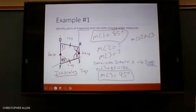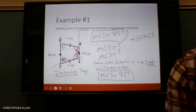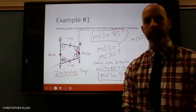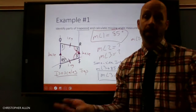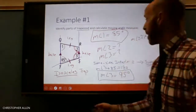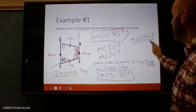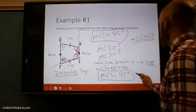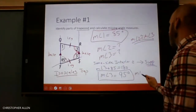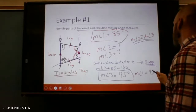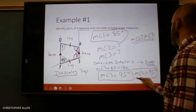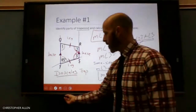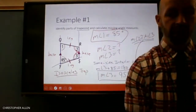If the measure of angle three is 95 degrees, what does the measure of angle two have to be? It also has to be 95 degrees, because we established that they're congruent. So the measure of angle two is also 95 degrees. That's our first example for section 6.6 — a pretty easy example.